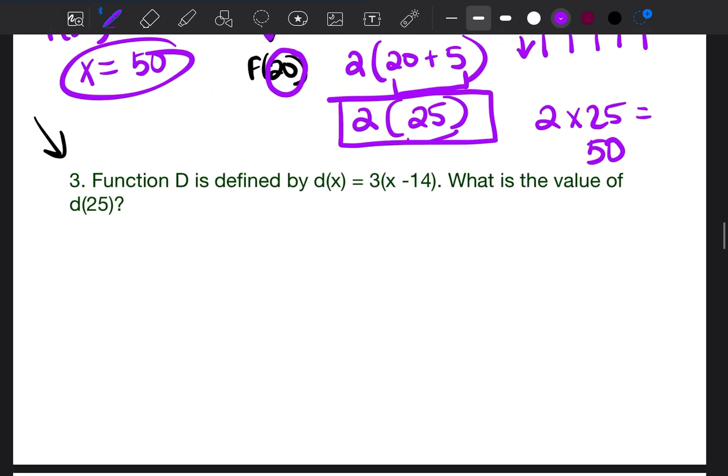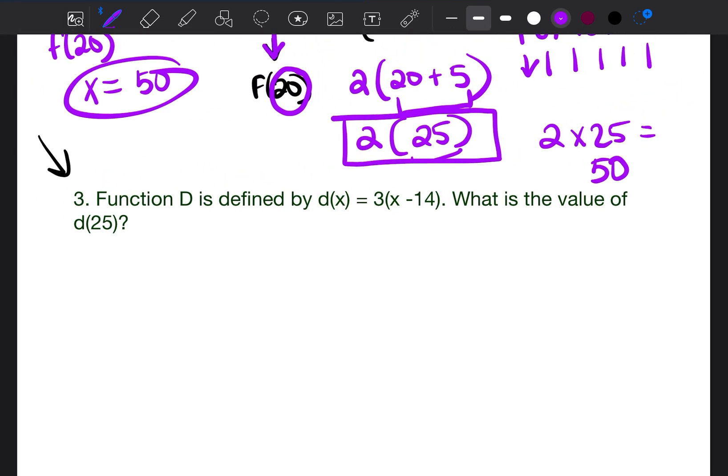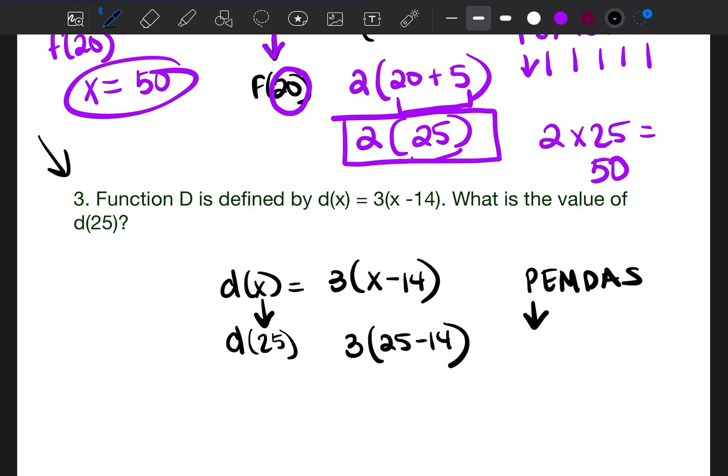Let's do this one more time. You guys can look at this and maybe try it on your own and press pause and then see how I would answer it. Function d is defined by d(x) = 3x - 14. What is the value of d(25)? So d(x) = 3x - 14. d(25) means wherever there is an x, you enter in 25. So 3(25) - 14. I write the order of operations, PEMDAS, and I do parentheses first.